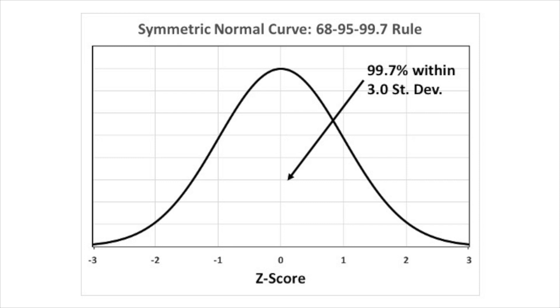Here's a picture of the normal distribution with all values converted to z-scores. A z-score of 0 is the center of the distribution, because it corresponds with the mean value. Moving to the right you see z-scores of 1, 2, and 3; moving to the left you see z-scores of minus 1, minus 2, and minus 3. Those values are interpreted as the number of standard deviations a value is above or below the mean.